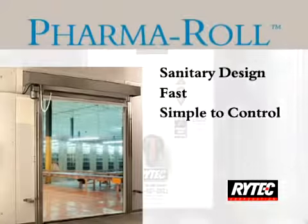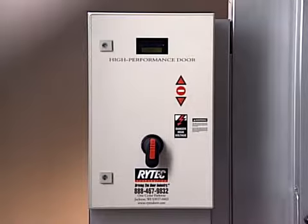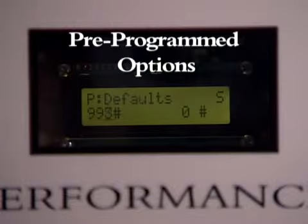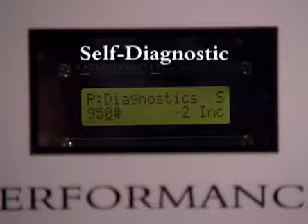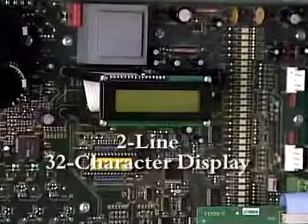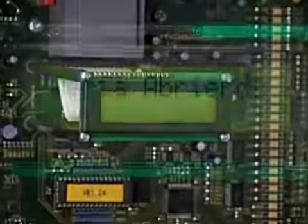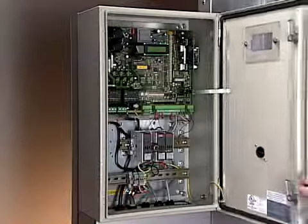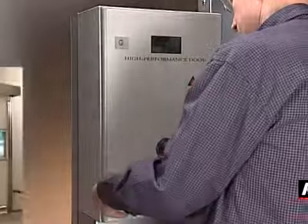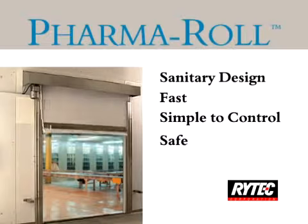Rytek's state-of-the-art System 3 AC drive and controller controls the door's operation. It has pre-programmed menu options, advanced motion control, self-diagnostic capabilities, and a two-line 32 character LCD display in English, Spanish, or French. This makes the door easy to set up, operate, and maintain.